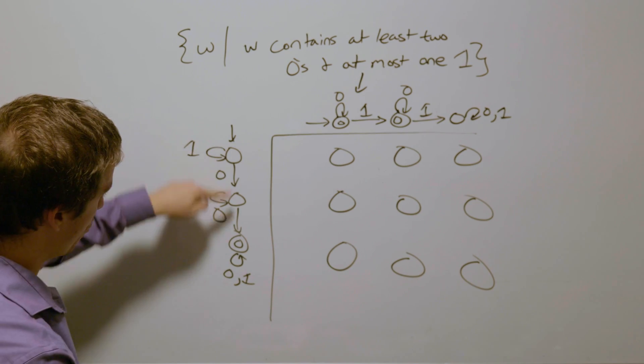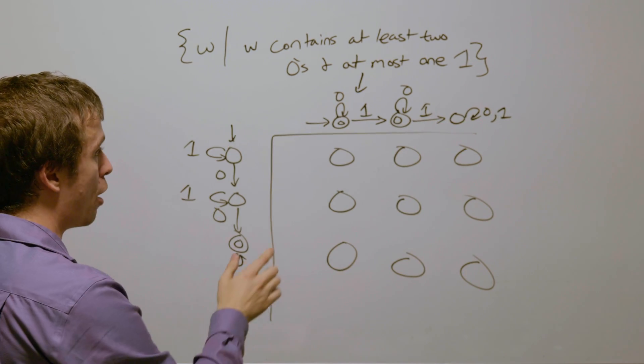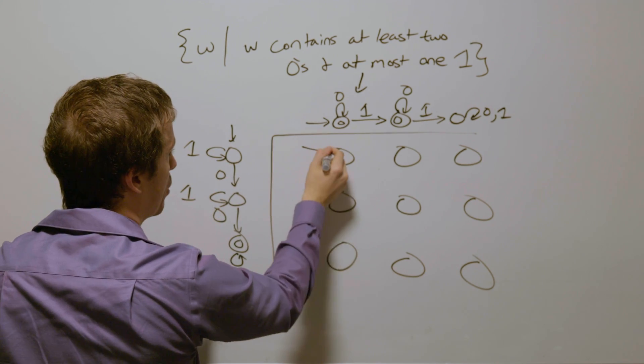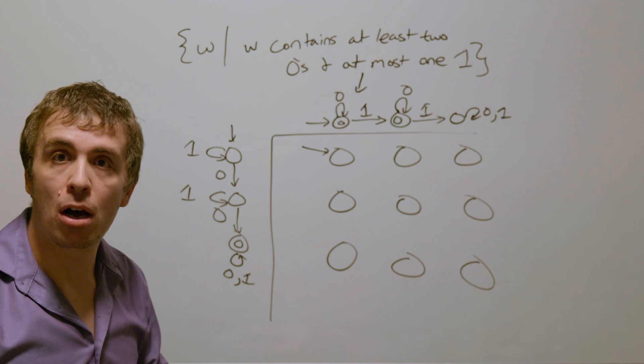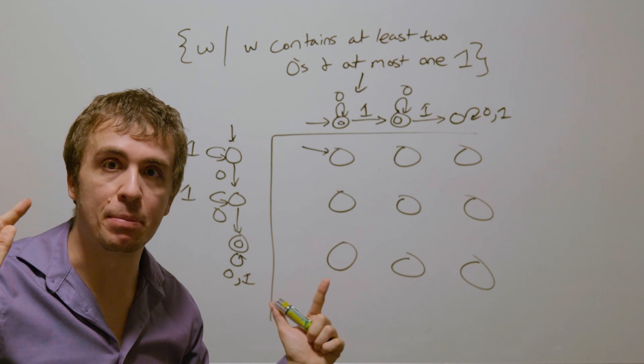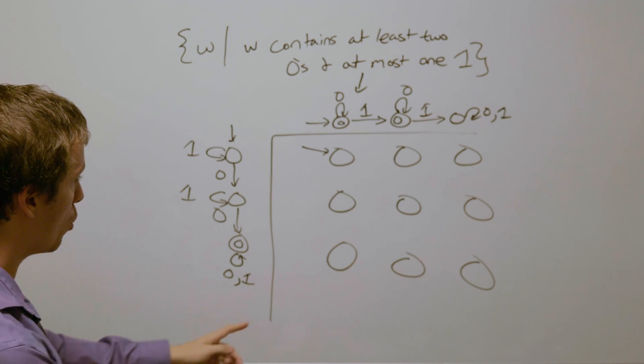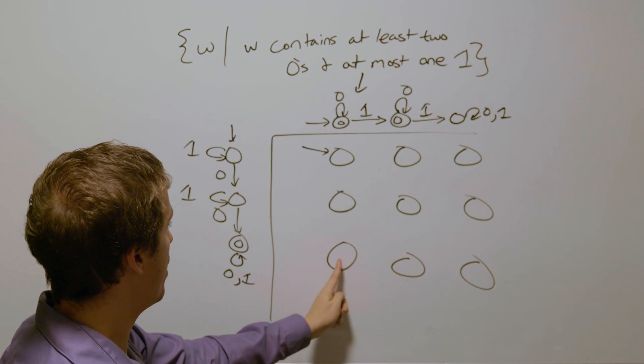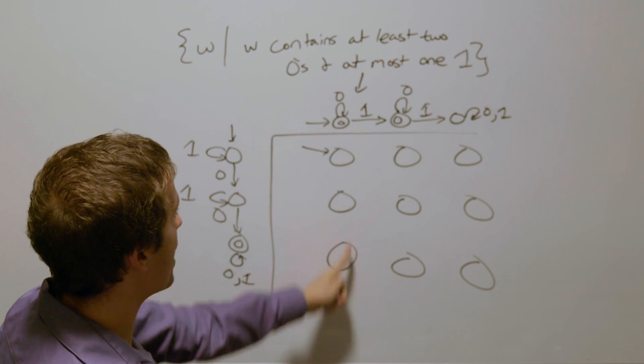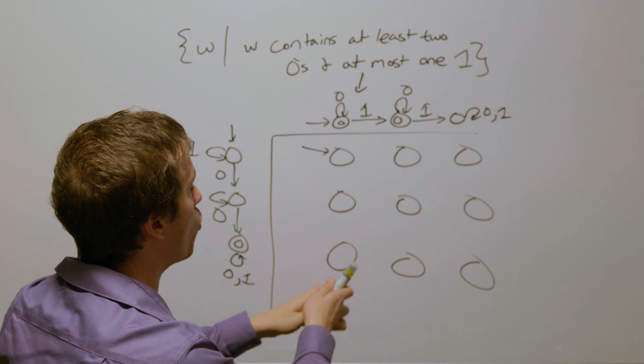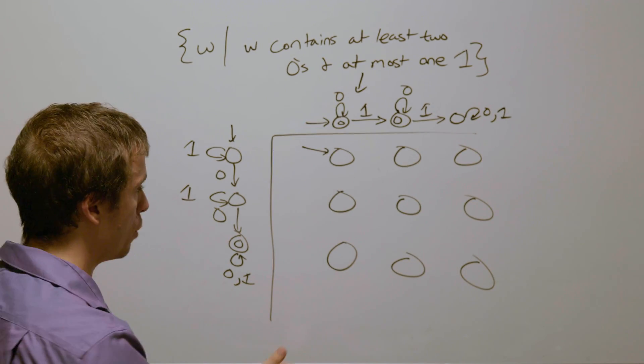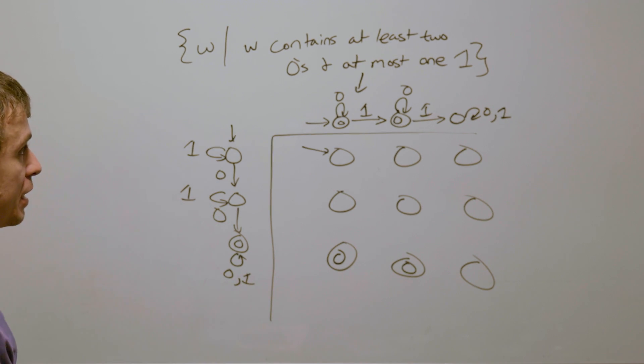So we had three states here, three states here. And so then now I'm going to have the start state be the start of both, because that's what the product construction says. So the states that are final states in the original two DFAs at the same time, those ones I'm going to make final, which are only going to be this one and this one, because this was a final state here and the final state here, as well as this one, but no other one is going to have both of the original ones being final. So those are the only two final states.